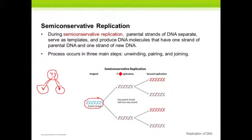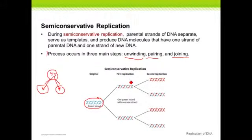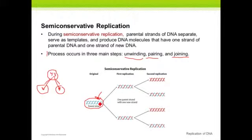What we discovered is that DNA goes through three steps during replication: unwinding, pairing, and joining. You can see the blue parent strand — what ends up happening is each strand is unwound and a brand new strand is created based upon it. This strand is basically split in half, with each half going to one of the new cells, and then it is paired and joined.